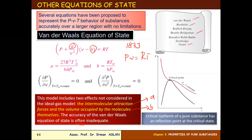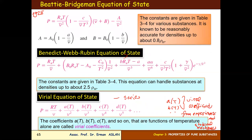However, the van der Waals equation of state is often inadequate. Near the critical point, all gas substances cannot behave like an ideal gas, so this formulation is not suitable in that region. Therefore, we look to other equations of state.